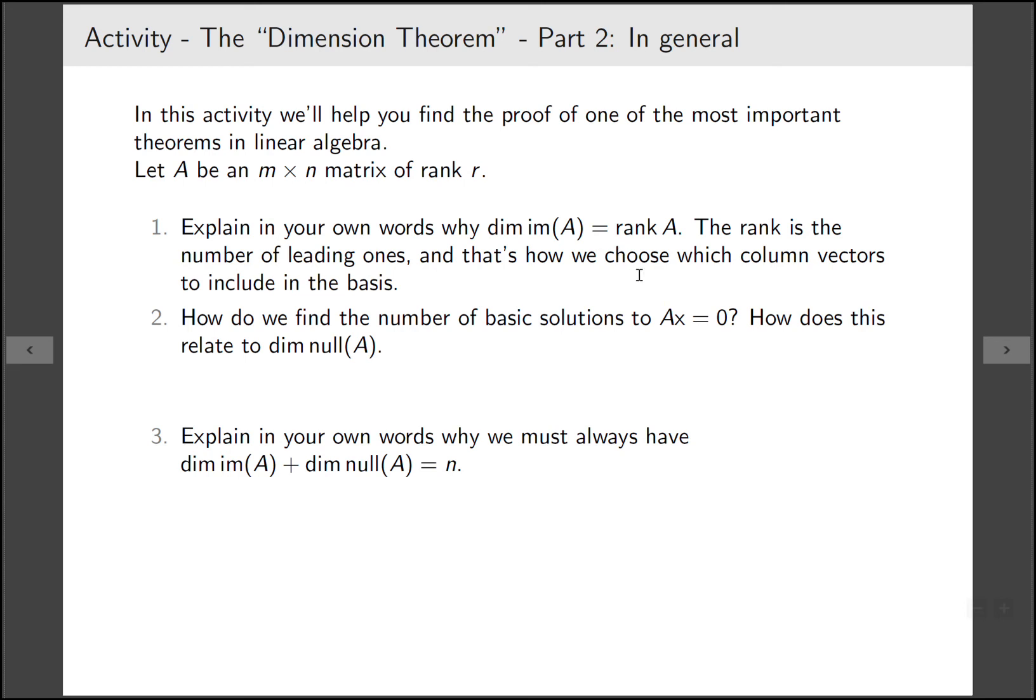We chose the basis based on the leading ones from A. So for every leading one in A, we add a vector into the basis of the image of A. So both of these are operating on leading ones. We do something once for every leading one.